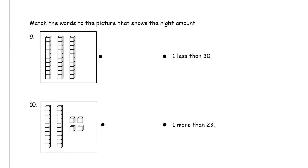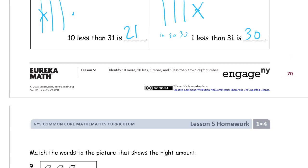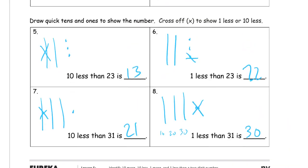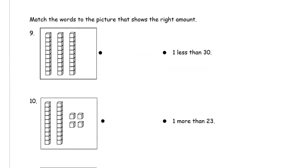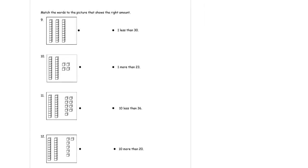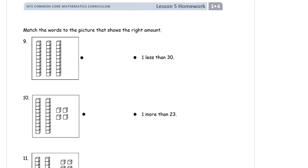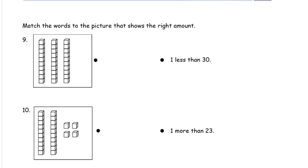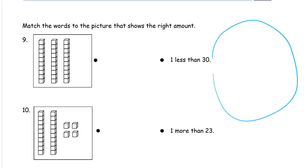Now we're matching words to the picture that shows the right amount. If you don't know what these numbers are, you can draw them to see what they're going to look like — that's a strategy you can use. You may be able to look at these and just tell what they're going to be. One less than thirty — you might know what that number is. If you don't, you could draw it. And this is how I would do one less than thirty, for example, if I was going to have to draw it. There's lots of space here to draw a picture to figure out what one less than thirty is.